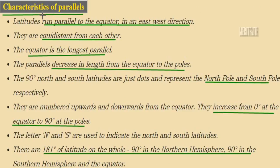The characteristics of latitude lines: latitudes run parallel to the equator in an east-to-west direction. They are always equidistant from each other — at an equal distance from one another. The equator line is the longest parallel line, and these parallel lines decrease in length from the equator towards the poles.